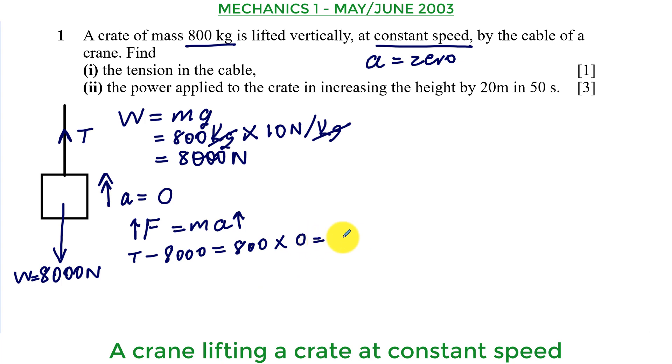Of course you can see that this one is going to give us zero. That implies that T minus 8000 is zero. Therefore, T is equal to 8000 newtons. And that is the tension in the cable.